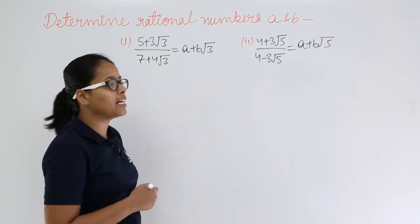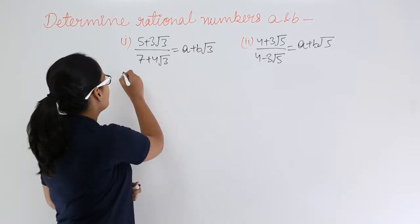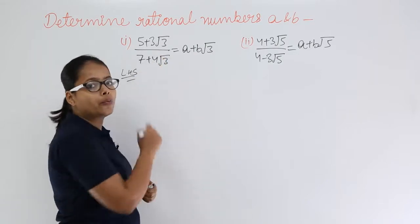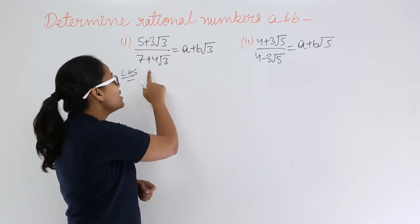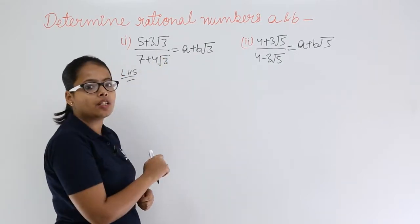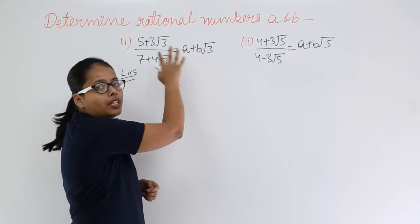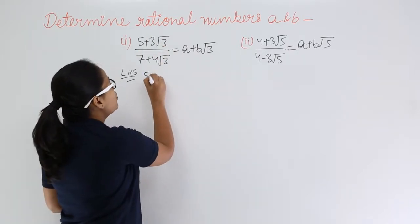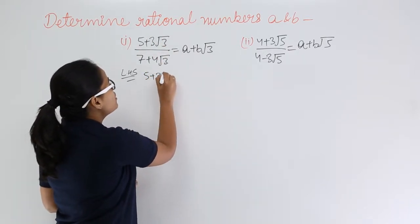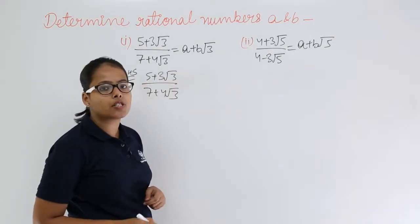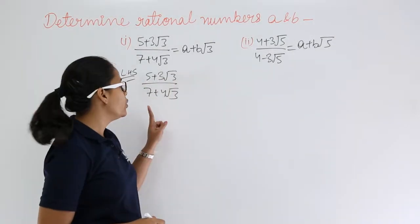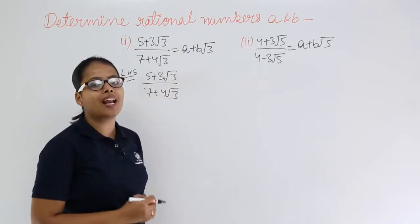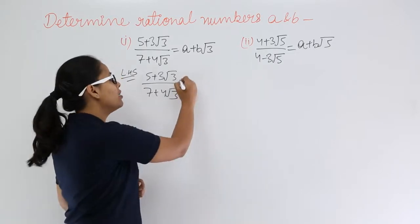Let's consider the left hand side expression. What you'll do is rationalize the denominator so that you can get the value in the numerator only. Let's write down the expression first. Then you'll rationalize the denominator — you know very well how to rationalize the denominator.